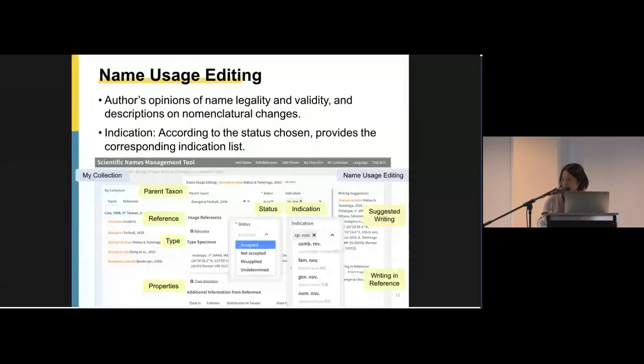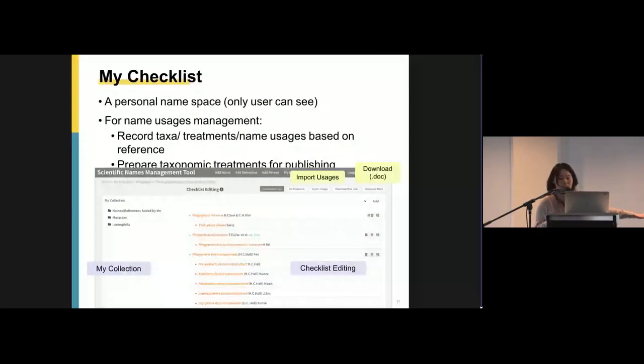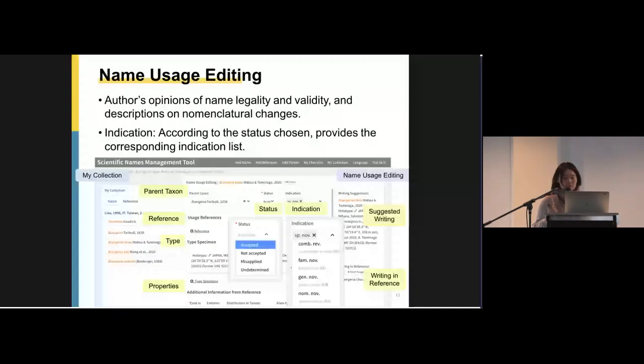So double click the scientific name card, then you can enter name usage editing. It's for expressing taxonomist opinions. So we tell the tool, the parent taxon, status, and indication. The indication option list is provided according to the status chosen. Then following by the reference that taxonomist cited here as the review. After chosen or editing information, the tool will provide the suggest writing automatically by arranging the inputs. And depending on the nomenclature code of the name, the suggest writing will show different styles. For example, ICN will show the reference abbreviation, but not in ICZN.